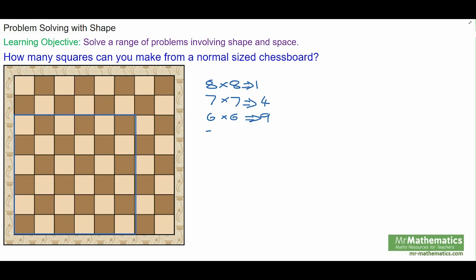Five by five. One, two, three, four, five, six, seven, eight, nine, ten, eleven, twelve, thirteen, fourteen, fifteen, sixteen. Yeah, sixteen five by five squares. So we can see the pattern—it's going to go up in square numbers.